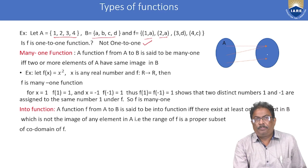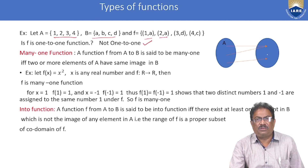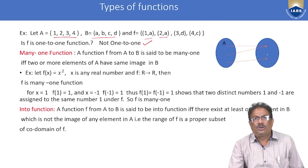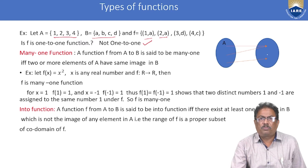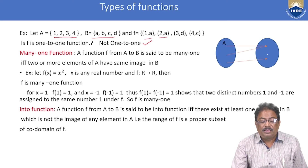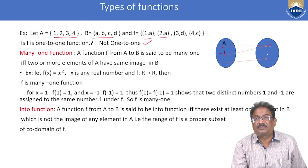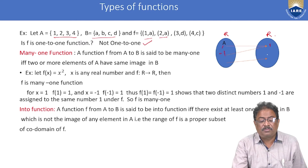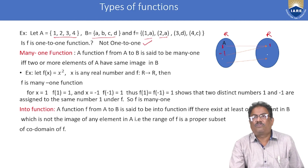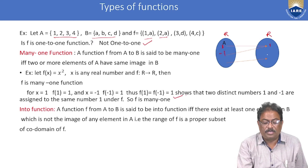Many-to-one function: A function f from A to B is said to be many-to-one if two or more elements of A have the same image. For example, if f(x) = x² defined from R to R, then f(1) = 1 and f(−1) = 1, so both 1 and −1 map to the same image. Therefore f(x) = x² is a many-to-one function.